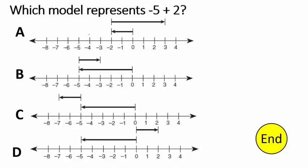Which model represents negative five plus two? Each one of these line plots is unique. As we read these, this one is going to say negative two plus five. Whatever comes first is where you start — I'm going backwards two, so that's the negative two, and then I'm going to the right five. So that's incorrect, A is gone.